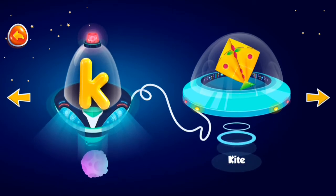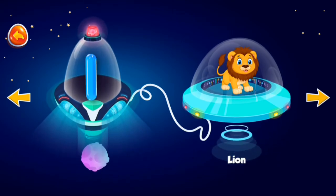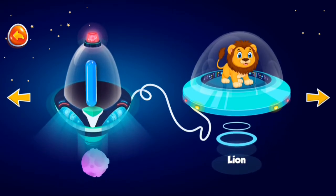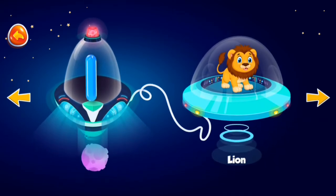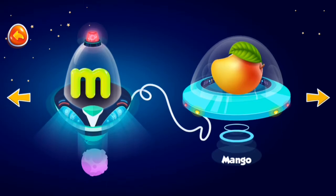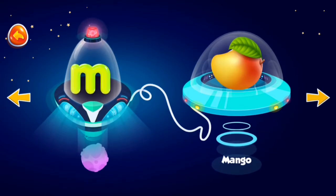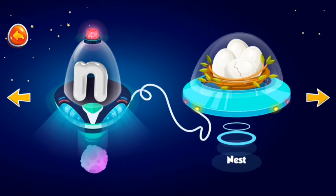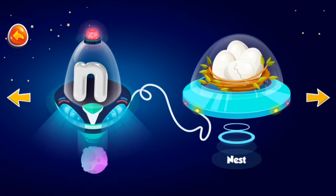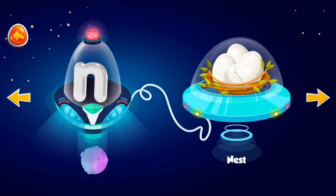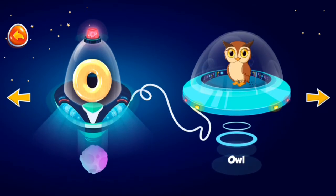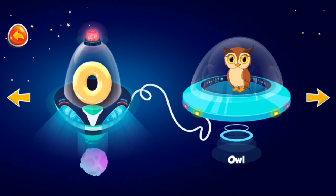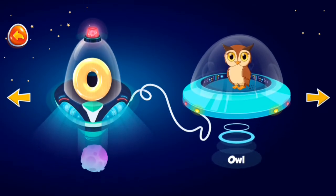K for kite, L for lion, N for mango, N for nest, O for owl.